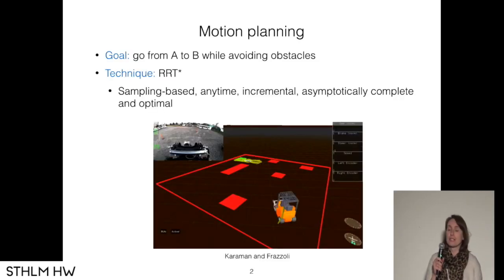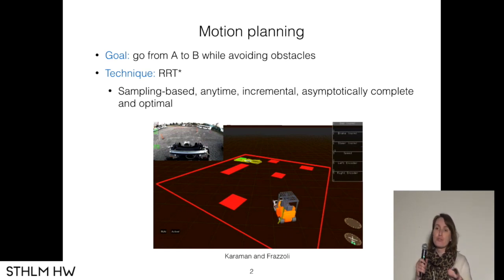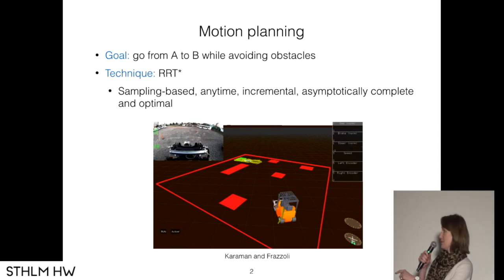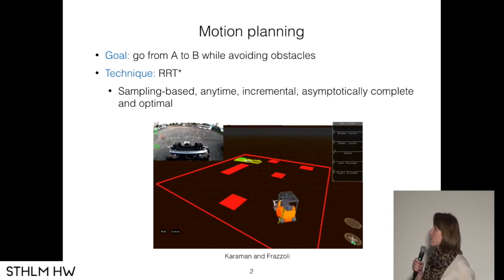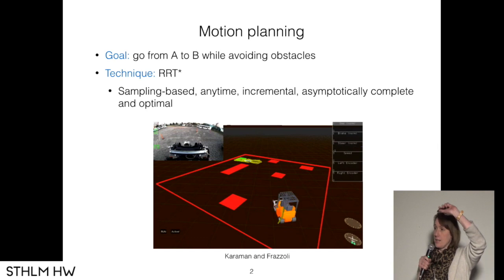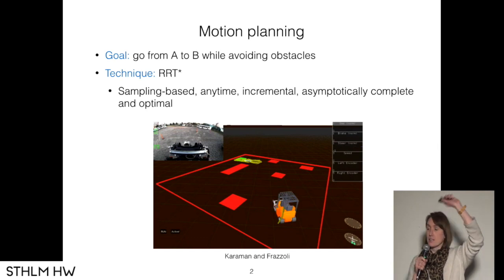So first of all, what is motion planning? In motion planning, your goal is to go from A to B while avoiding obstacles. So there is your autonomous forklift, there is your green goal region, there are a bunch of red obstacles. It's somewhere in between low-level control and high-level path planning, routing, stuff like that.